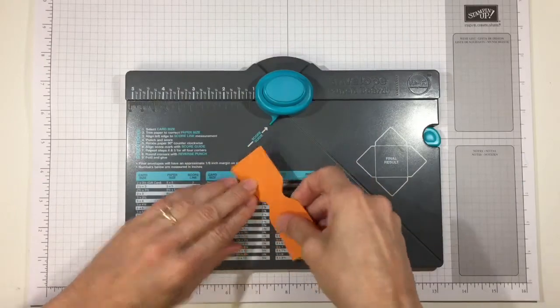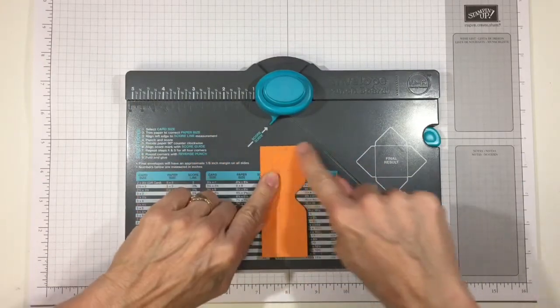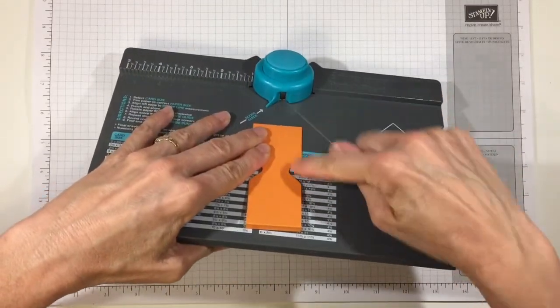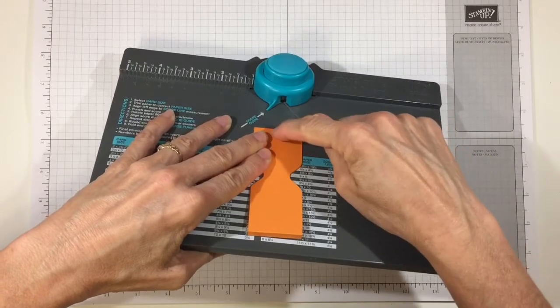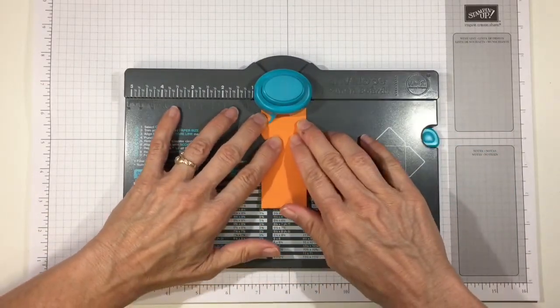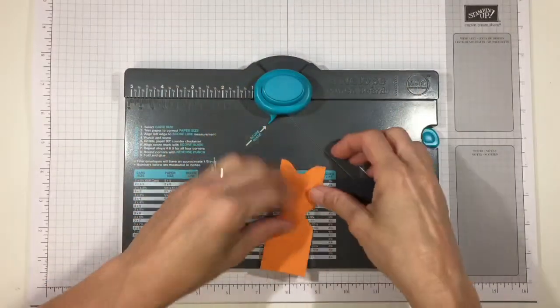Now to make his ears, and I'm going to make sure I've got them lined up again, we're actually going to put his head, the middle of his head, straight into the throat of the punch and we're trying to get that curved part of the punch right in the middle of his head. So go ahead and just put that straight in and punch, and that makes his little ears.